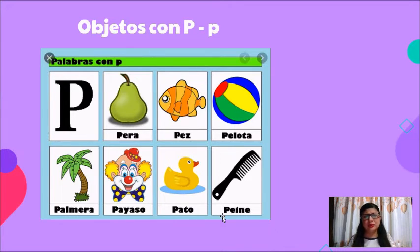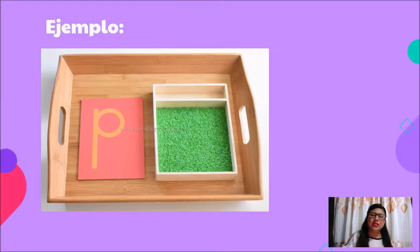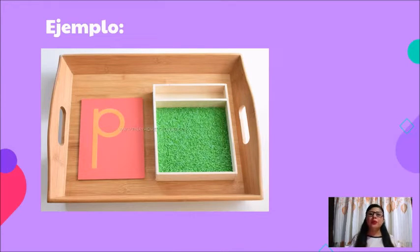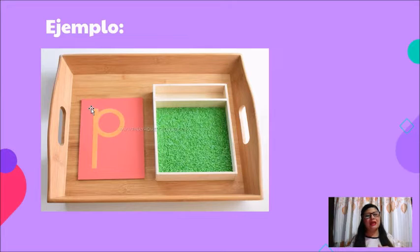Ya que tenemos identificada esta situación, vamos a pasar a un pequeño juego. Este juego ya lo hemos realizado en la escuela pero ahora necesito que tú lo hagas en casita y que juegues con mamita, con papito, con hermanitos. ¿Qué es lo que vas a hacer? Necesitas una tapa de caja de zapatos, harina — si no tienes harina puede ser arena — y una tarjeta.